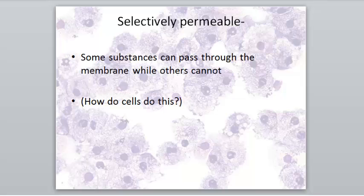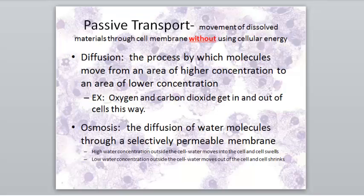There are different methods. Passive transport is when dissolved materials pass through a cell membrane without using any energy. Passive means it doesn't use energy, and transport means to move. There are two main ways that things move through passive transport: diffusion and osmosis.